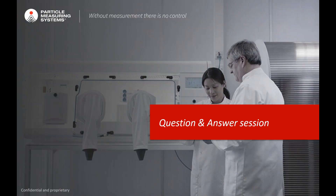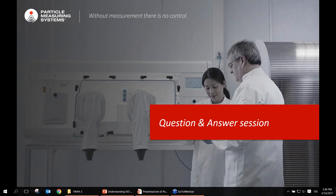Now for the question and answer session. First question: Can I omit the annual clean room classification required by ISO 14644 Part 1 if I run continuous monitoring? No. Clean room monitoring cannot replace classification performed on an annual or semi-annual basis. The classification process dictated by ISO 14644 Part 1 must be performed in combination with other equipment tests, such as HVAC system tests described in ISO 14644 Part 3.